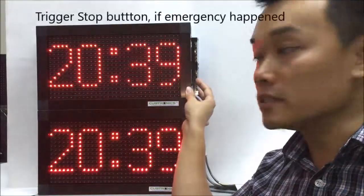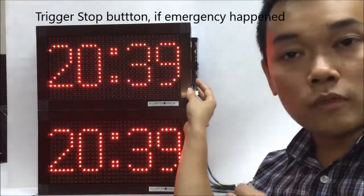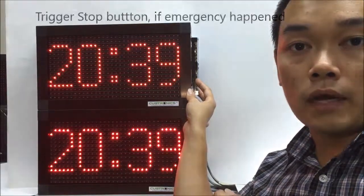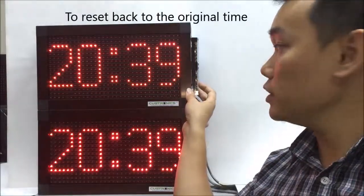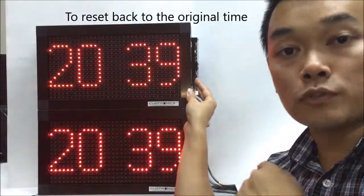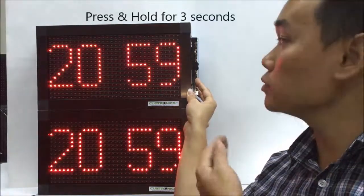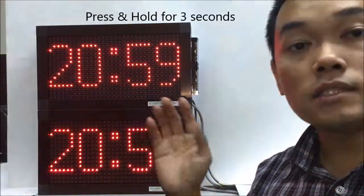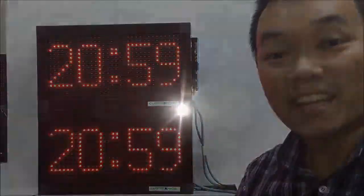Let's press the stop button to stop the operation. To reset the time, we need to hold the reset button for three seconds to go back to the previous time. This is the time we set earlier. Thank you for watching.